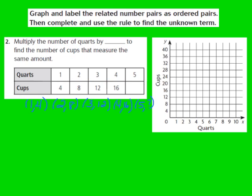Step two is to graph the ordered pairs on our coordinate grid. Our first ordered pair is (1, 4), so from the origin we go over 1 on the x-axis and up 4 on the y-axis, and we graph that first point. Our next ordered pair is (2, 8), so we move over 2 on the x and up 8 on the y, and we graph that ordered pair right there.